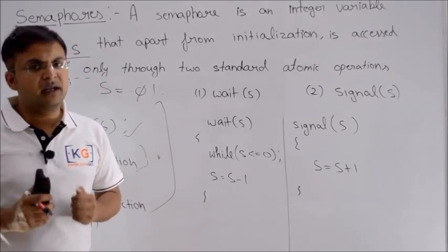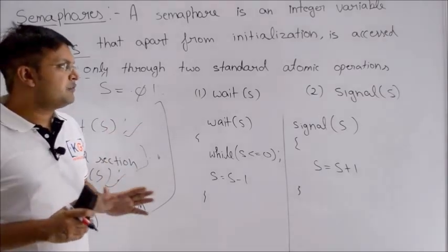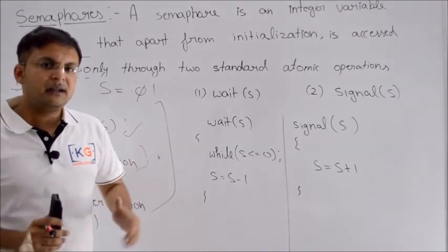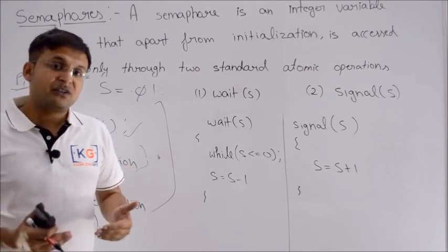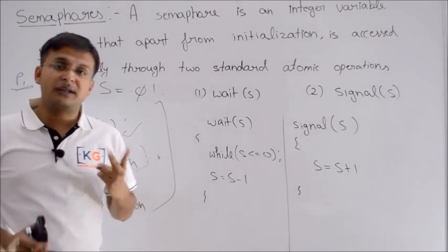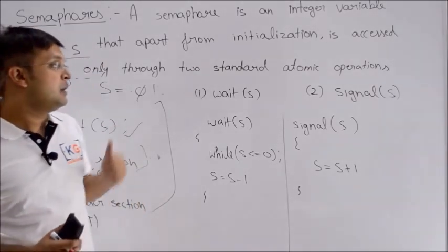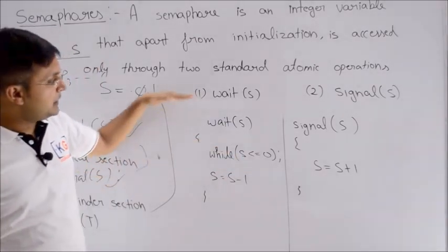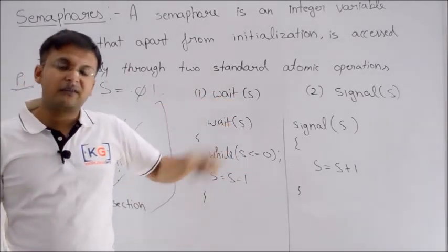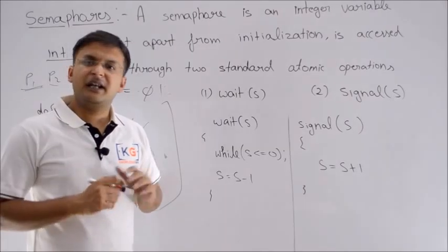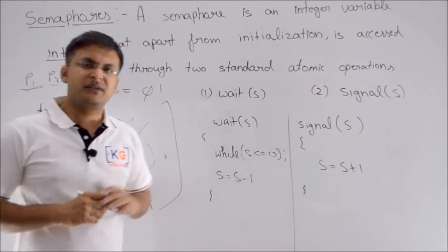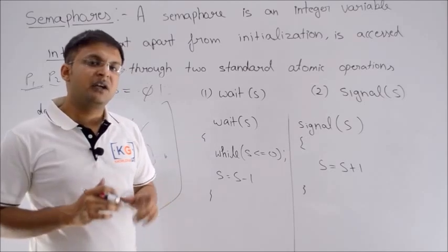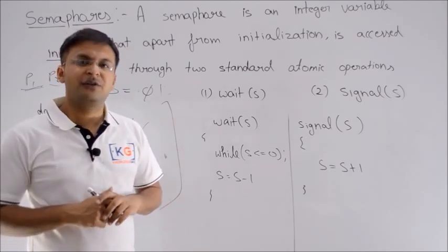The three major applications of semaphores are: first, solving the critical section problem; second, deciding the order of execution among processes; and third, resource management — where if you have multiple copies of a resource, semaphores help you manage them efficiently.